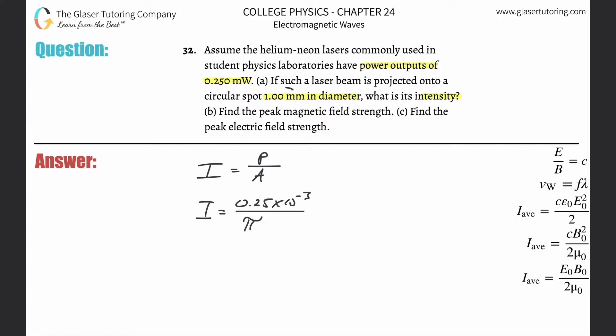What's the radius? Well, it's half the diameter. So if this is one millimeter, then the radius is going to be 0.5 millimeters. But we don't need that in millimeters, we need that in meters. So multiply it by 10 to the minus 3.